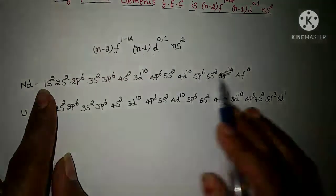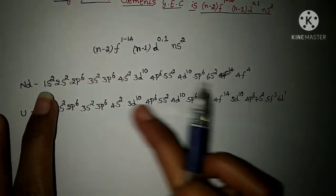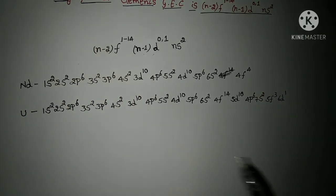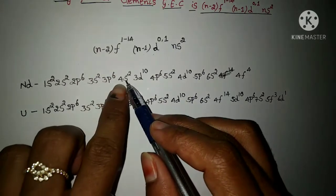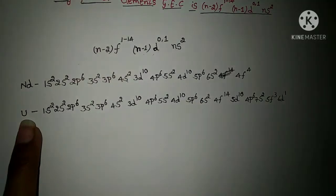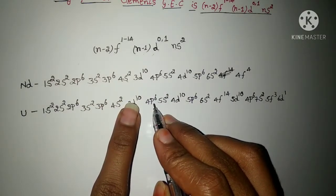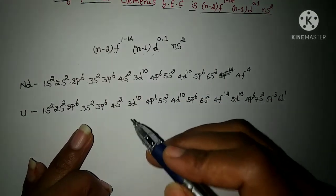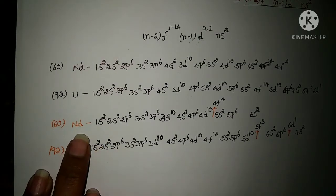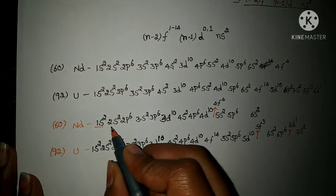This is the electronic configuration for neodymium and this is the electronic configuration for uranium. If you observe, they are written according to Moller's diagram or increasing order of energy: 1s, 2s, 2p, 3s, 3p, then 4s, and so on. Now I am going to write the electronic configuration according to shell-wise to make it easier to understand.